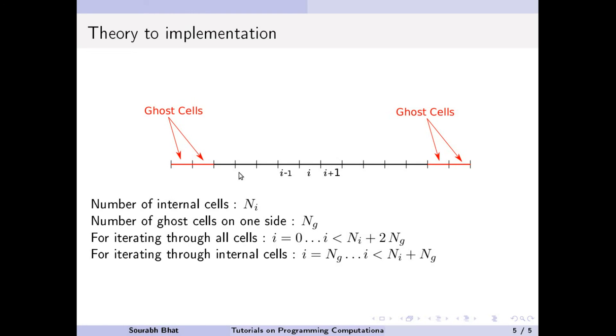So if we want to do some operation for all the cells, like initially when we initialize the complete domain, we will have to iterate through the complete domain. In that particular case, we will be iterating through all the points starting from 0 and going up to Ni plus 2ng. The 2ng is because on the left hand side we have 2 and right hand side we have two ghost cells. So starting from 0 up to Ni plus 2ng.